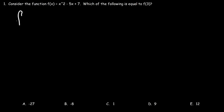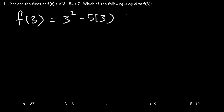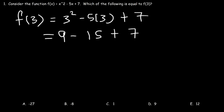To evaluate the function, we simply need to replace x with 3. So it's going to be 3 squared minus 5 times 3 plus 7. 3 squared, or 3 times 3, that's 9. 5 times 3 is 15. And 9 minus 15 is negative 6. Negative 6 plus 7 is equal to 1.